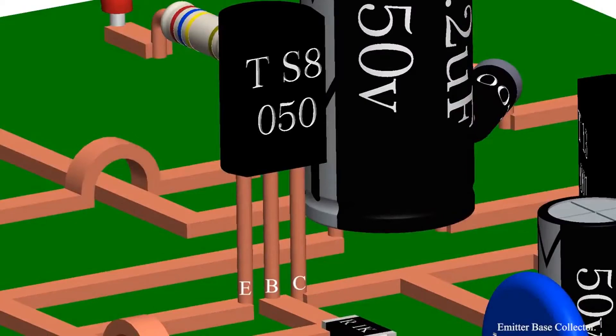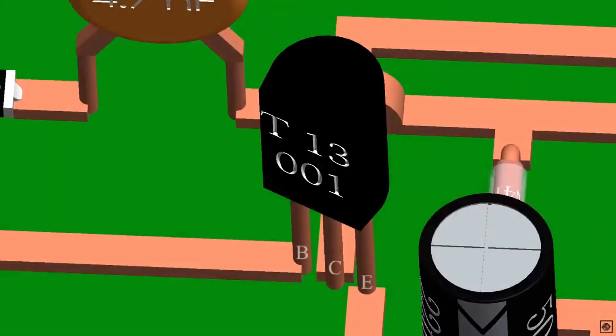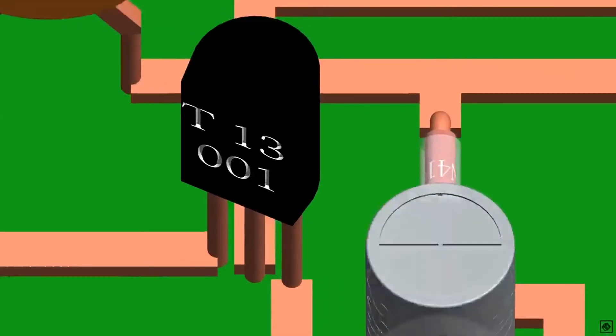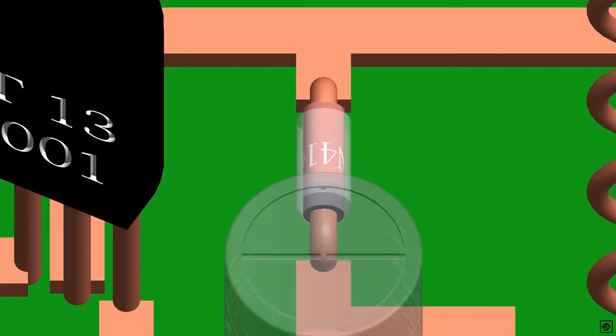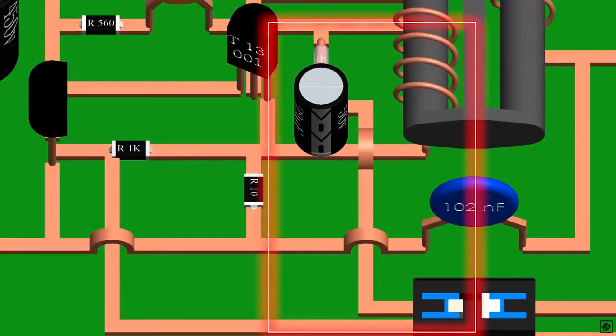This is transistor 13001. This is its pin configuration. This is a diode. It looks like a Zener diode but it's a fast switching diode 1N4148, and a capacitor of 50 volts 22 microfarad. This is an AC to DC converter for the photo transistor in the optocoupler.